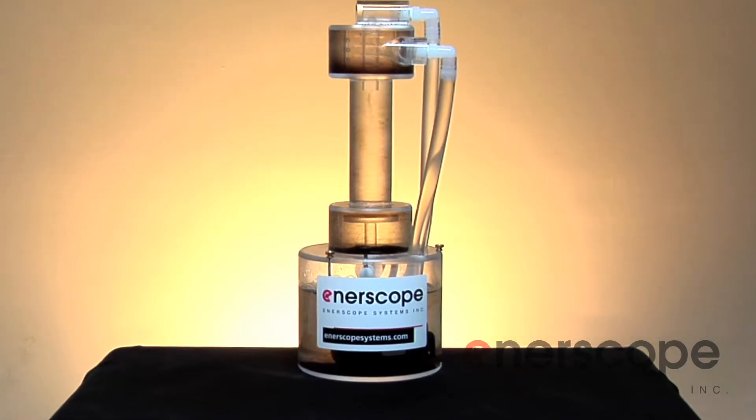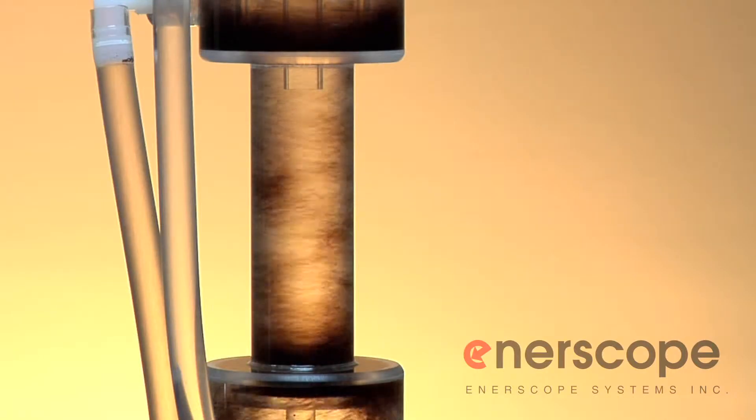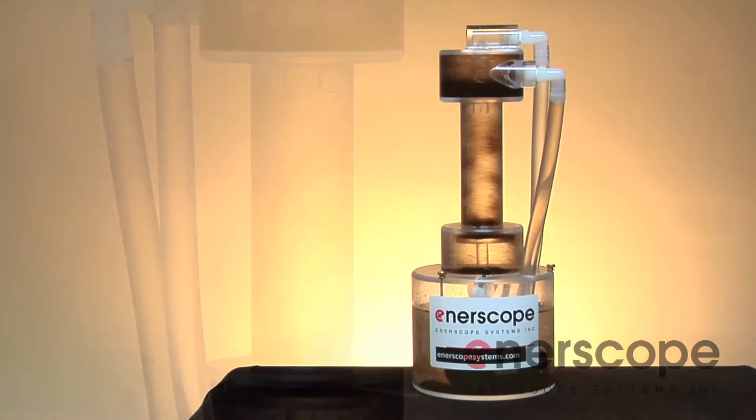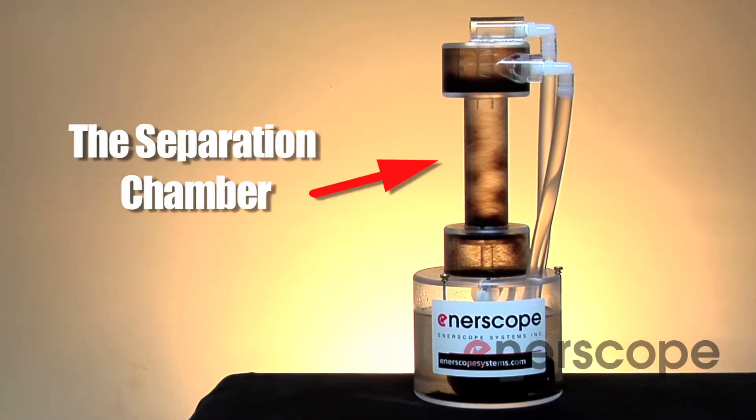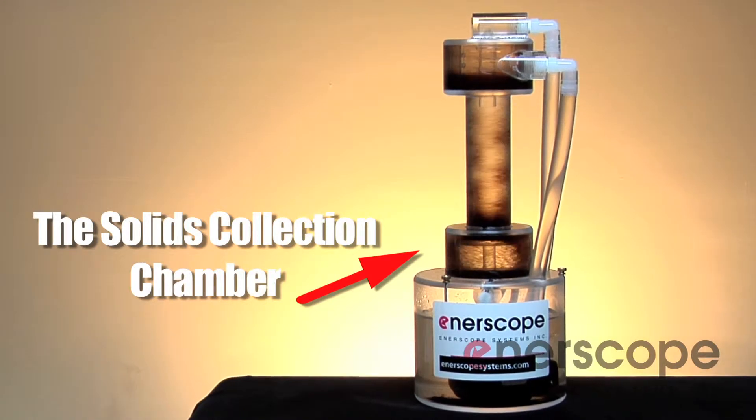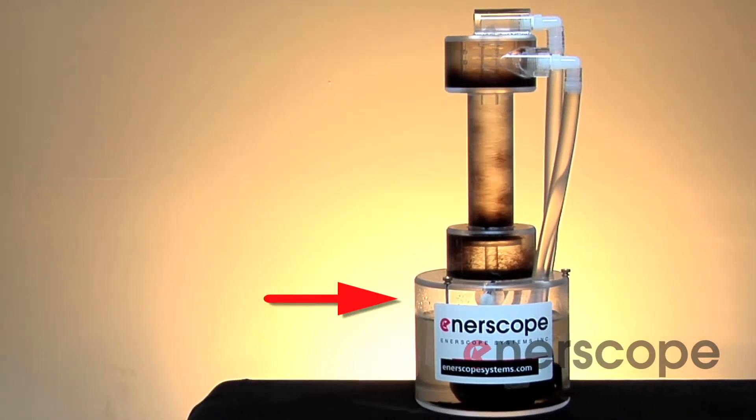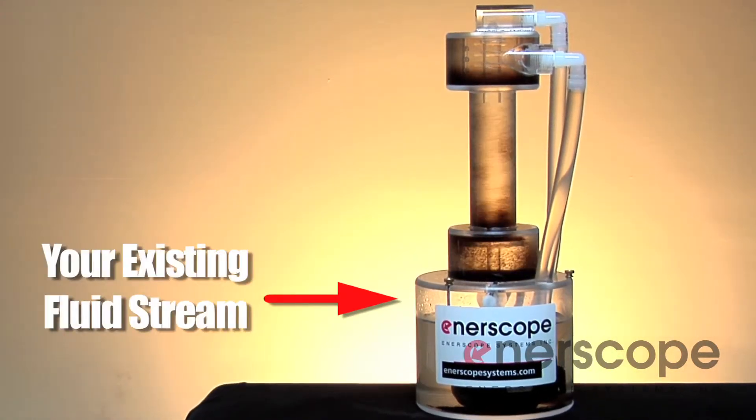The DeSander removes solids from your fluids using centrifugal action. The DeSander is made up of three sections: the acceptance chamber, the separation chamber, and the solids collection chamber. This bottom portion of the demonstration unit is representative of your existing fluid stream.